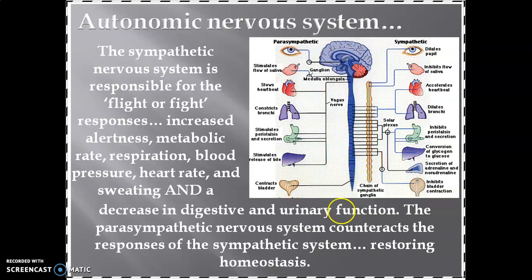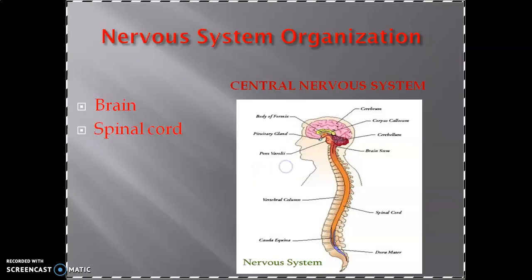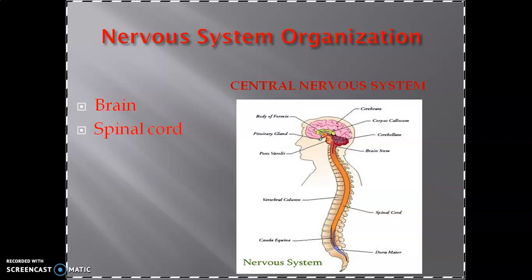Let us review the nervous system once more. The nervous system consists of two parts: the central nervous system and the peripheral nervous system. The central nervous system consists of the brain and the spinal cord.